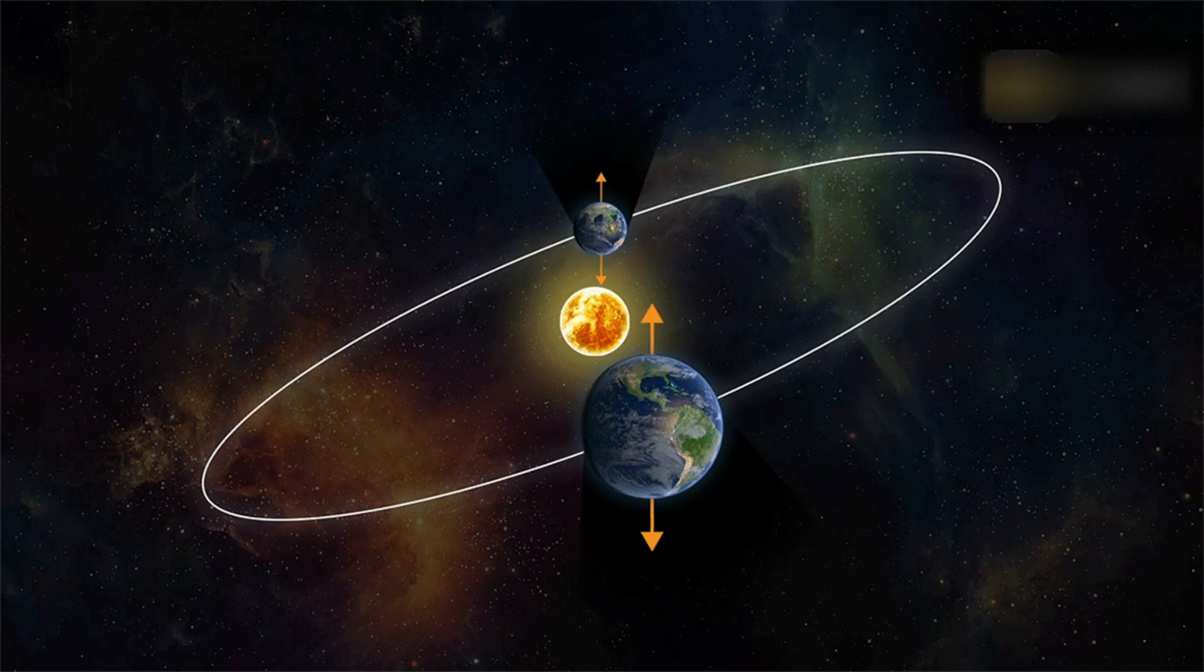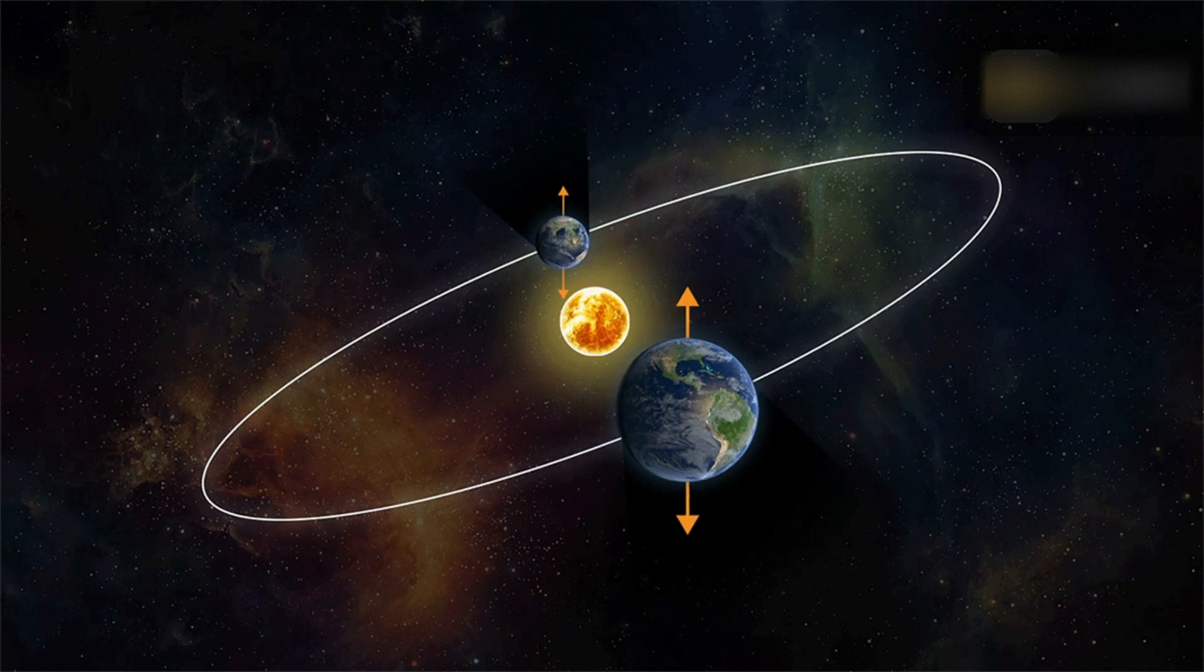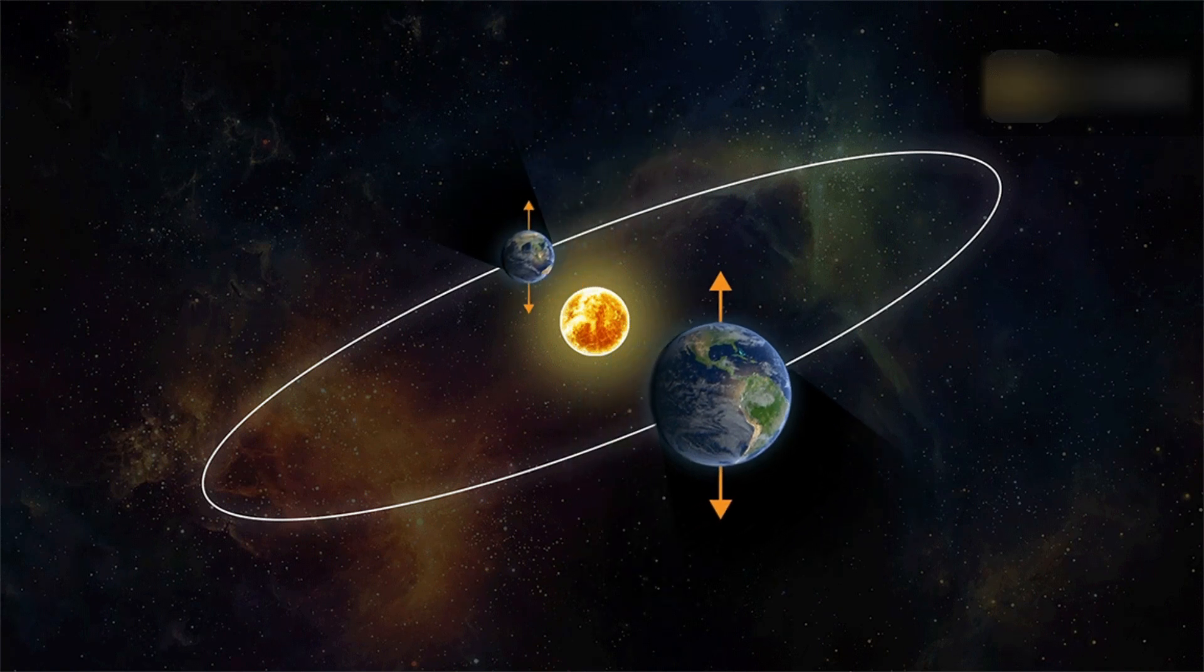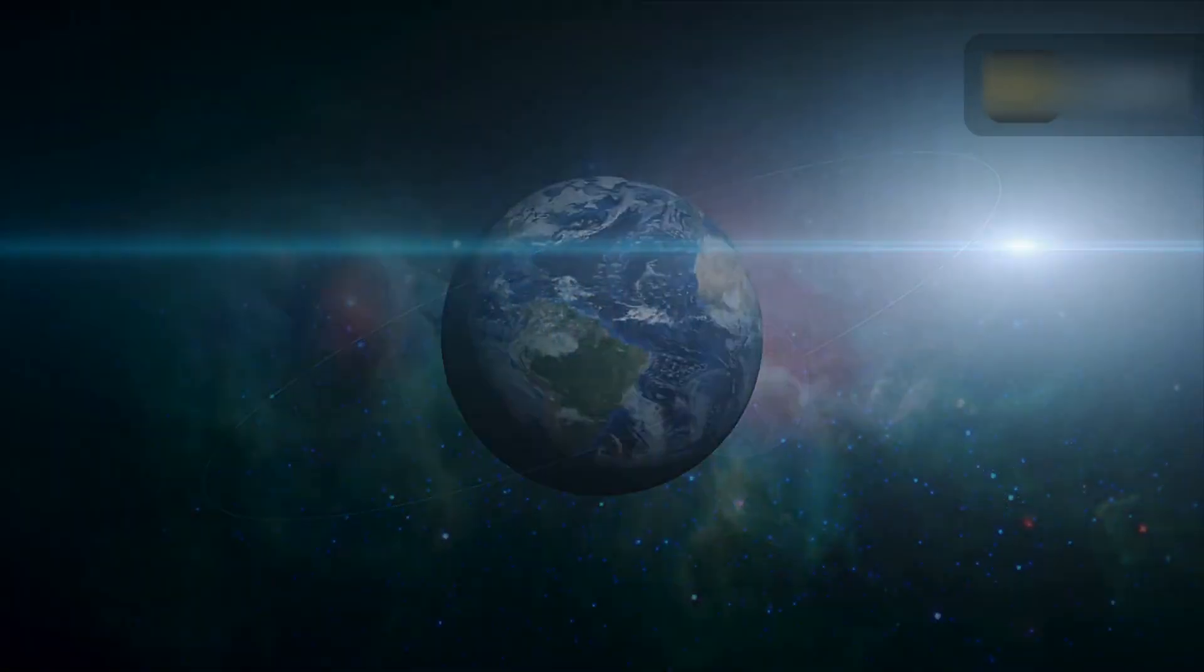There are two equinoxes each year, one is in March and the other is in September. In March, the sun crosses the equator from south to north.